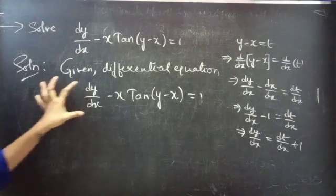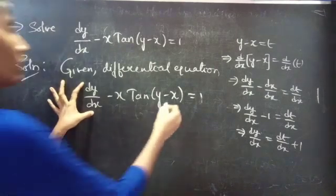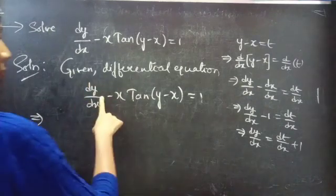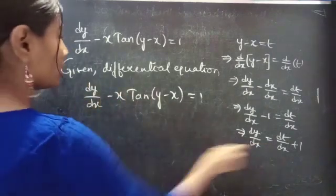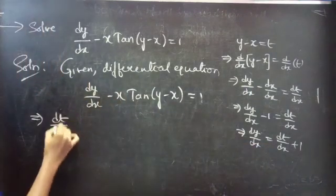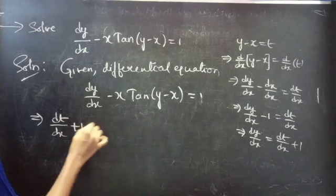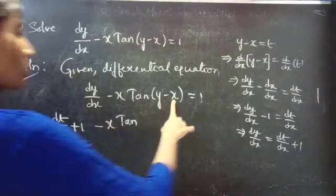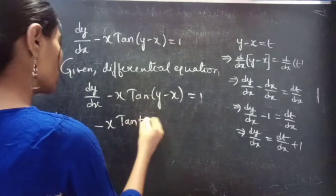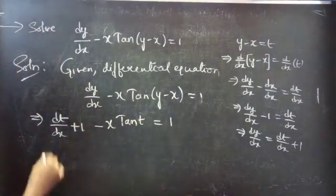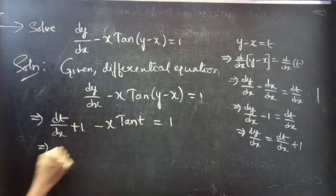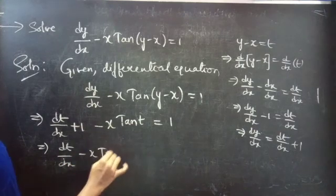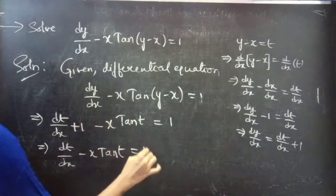Now we will replace dy/dx and y minus x in the equation. Replace dy/dx by (dt/dx plus 1), and replace y minus x by t. This becomes: dt/dx plus 1 minus x·tan(t) equals 1.